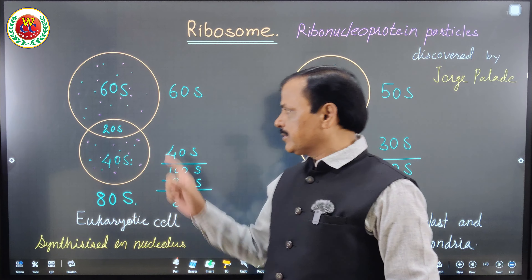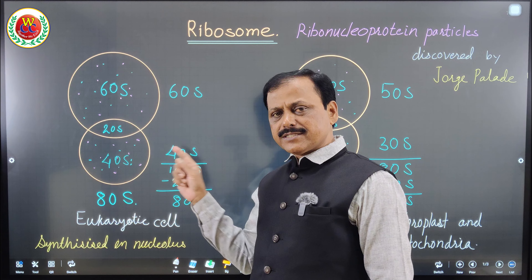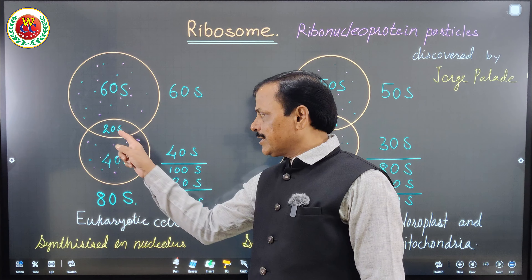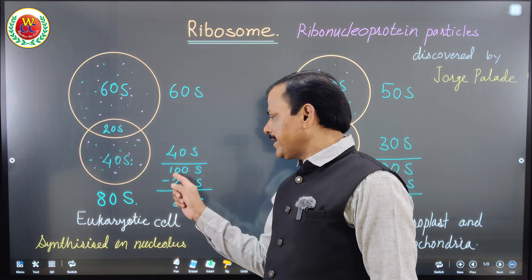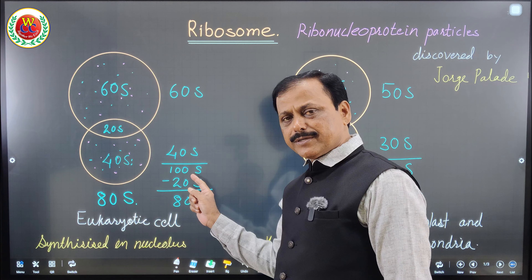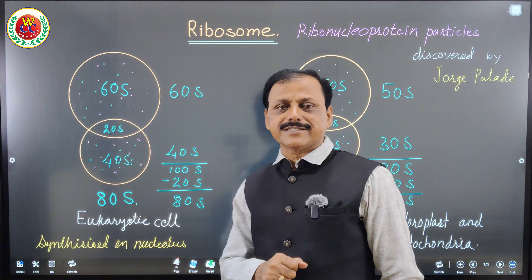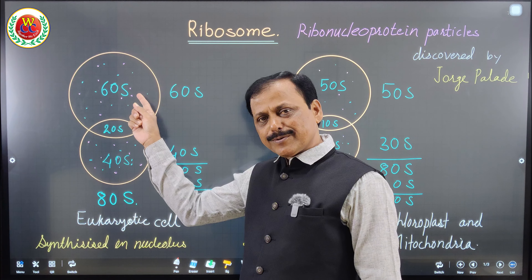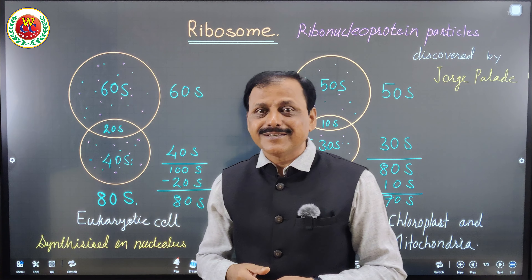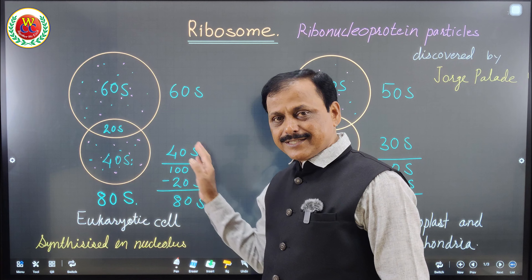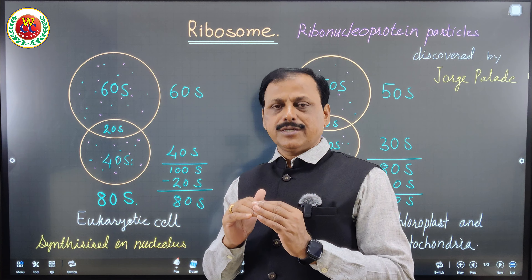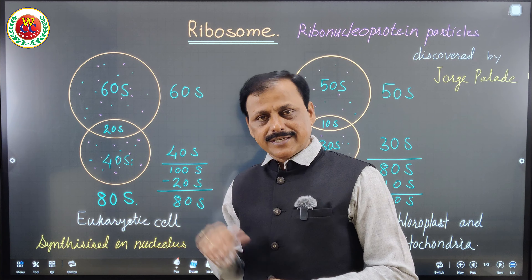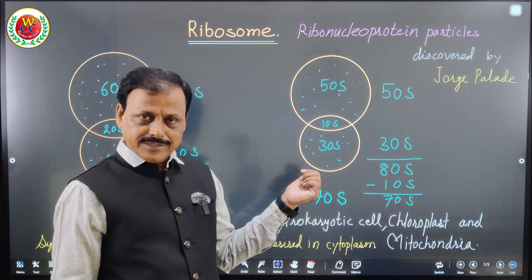In 80S ribosomes, the larger subunit is 60S and the smaller is 40S. You might expect 60S plus 40S to equal 100S — but it is not, because when the two subunits come together, a 20S portion of both subunits overlaps. That 20S must be subtracted, so 100S minus 20S gives 80S. This is not clearly mentioned in the textbook, but that is why it is called 80S.